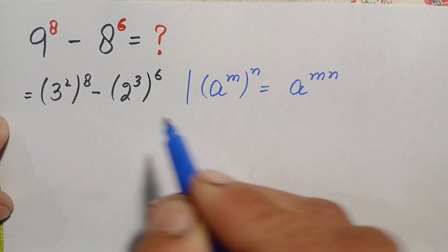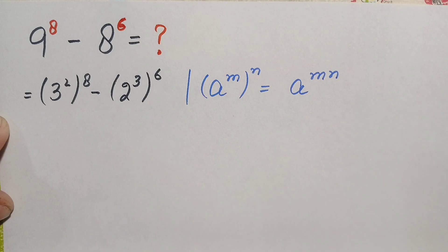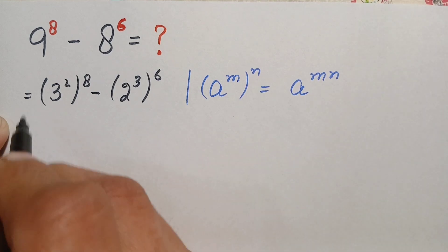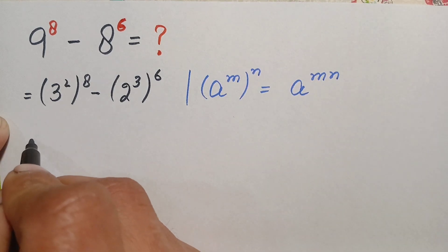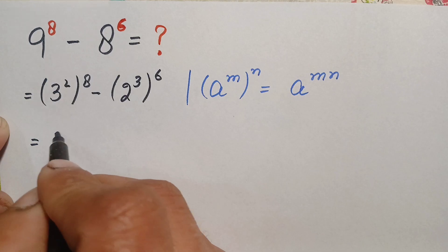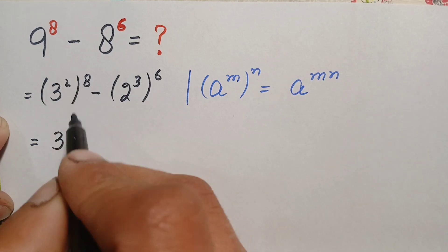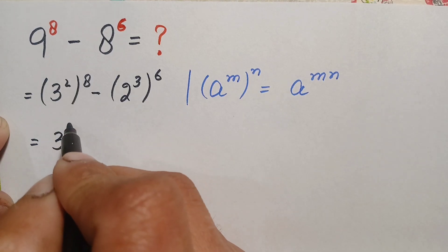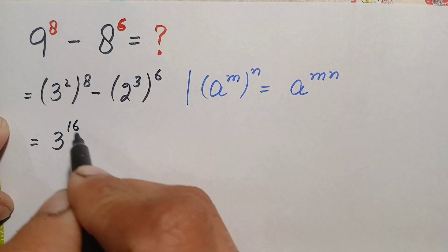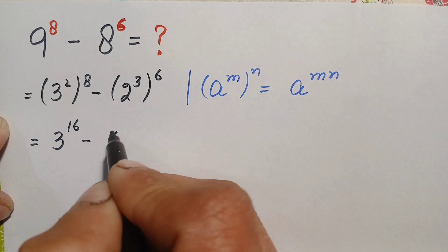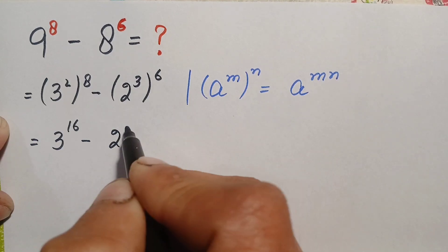Using this identity, we multiply the powers with each other. This will become 3 raised to power 2 times 8, which is 16. So this is 3^16, minus 2 raised to power 3 times 6, which is 18. So we have 3^16 minus 2^18.